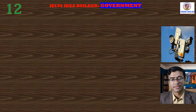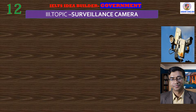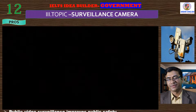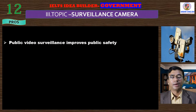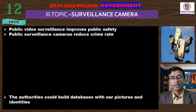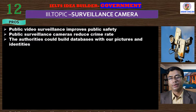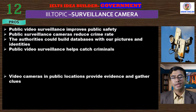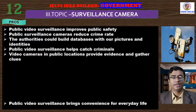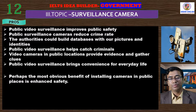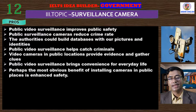Now we will move to our next subtopic of the day, and that is surveillance cameras in public places. Setting up surveillance cameras at public places has got some positive aspects. Public video surveillance improves public safety. Public surveillance cameras reduce crime rate. The authorities could build databases with pictures and identities. Public video surveillance helps catch criminals. Video cameras in public locations provide evidence and gather clues. Public video surveillance brings convenience for everyday life. Perhaps the most obvious benefit of installing cameras in public places is enhanced safety.